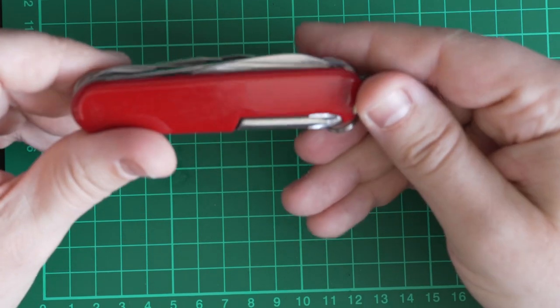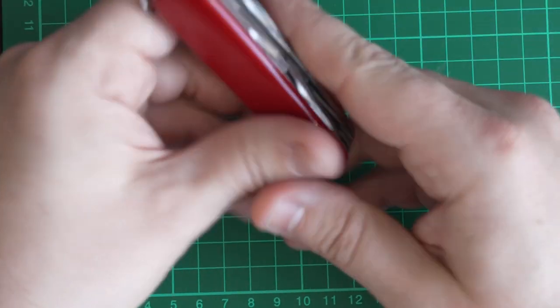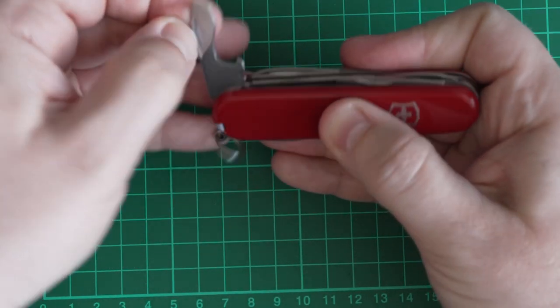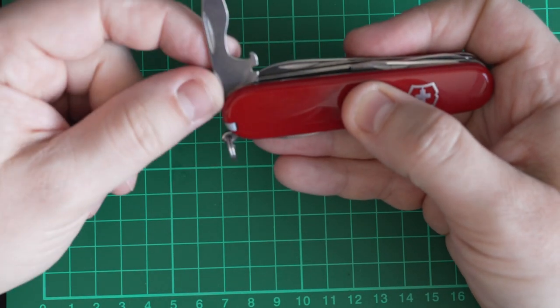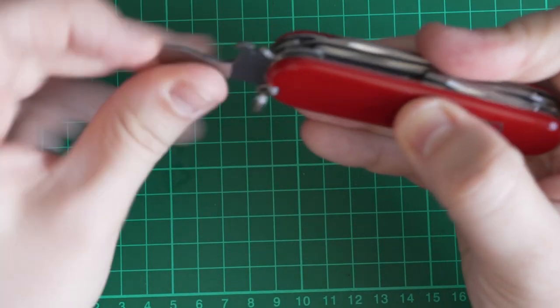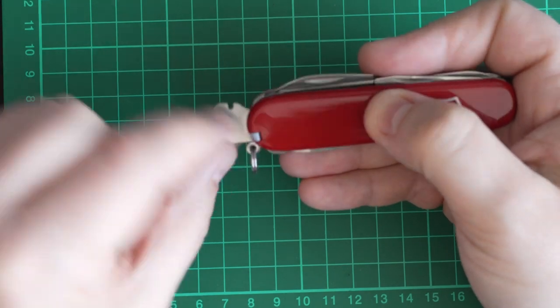Other things we've got, we've got the main tools then. So we've got the standard set of a bottle opener with a big flathead screwdriver and something that Victorinox claim is a wire stripper. We'll test that later.